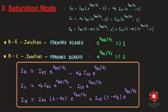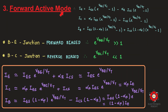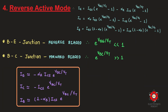In the forward active mode, the base-emitter junction is forward biased and the base-collector junction is reverse biased. Applying the corresponding approximations to the general equations, the emitter current IE ≈ IES · exp(VBE / Vt), which is relatively large. The collector current is also relatively large, while the base current is small — approximately (1 − αF) · IE.